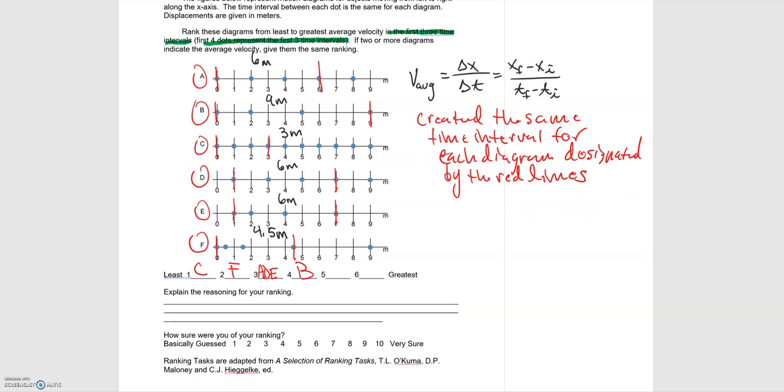Our reasoning for the ranking is that since they all had the same time interval, a larger displacement gives a larger average velocity.